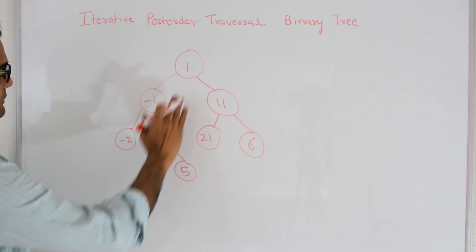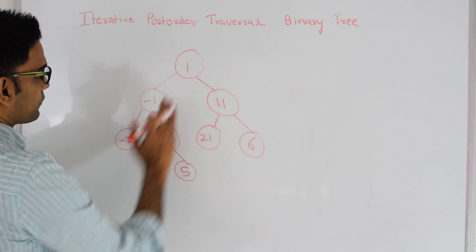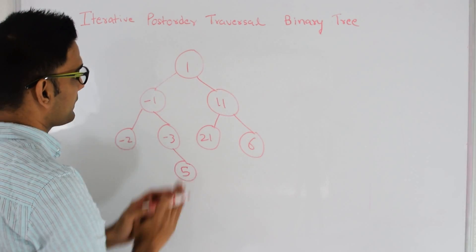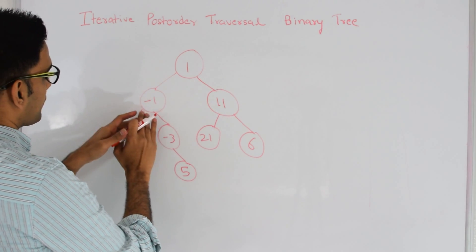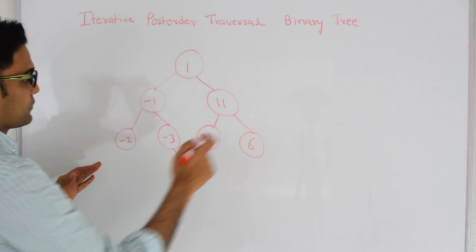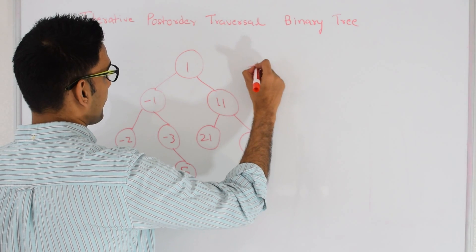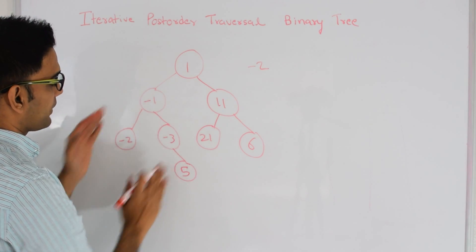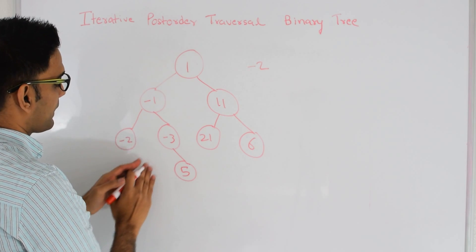Let's start from here. This is the root of my tree. Before printing 1, I'll print everything on the left side, I'll print everything on the right side, and then I'll print 1. That's also true for -1. Then we come to -2, so first we print -2. Now I go to -1 — I still need to print the right side of -1.